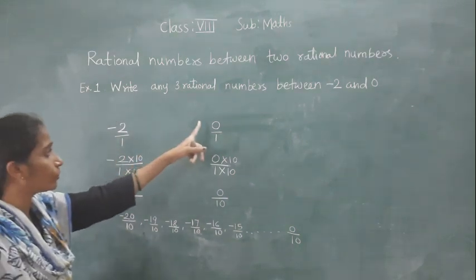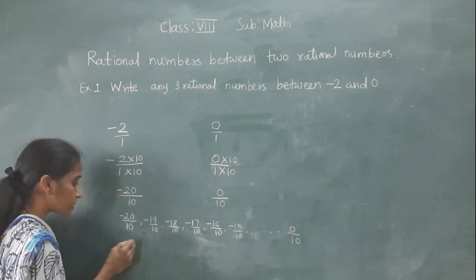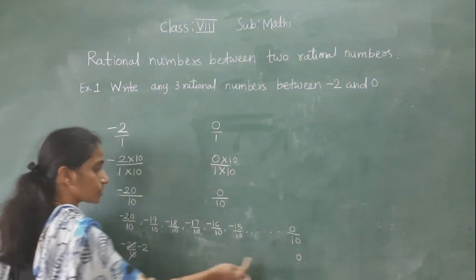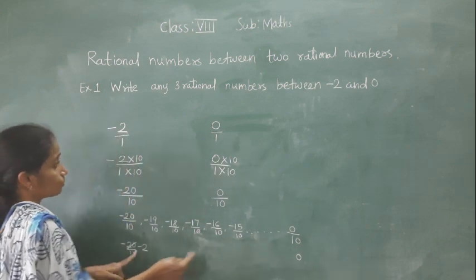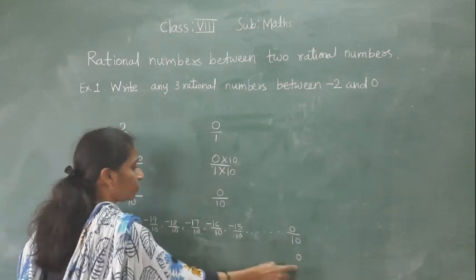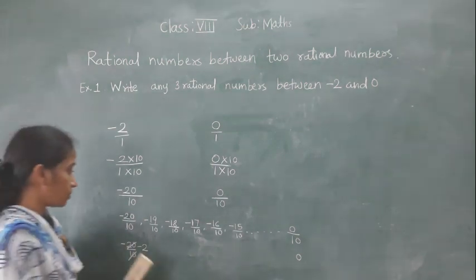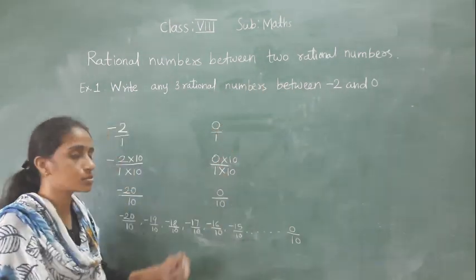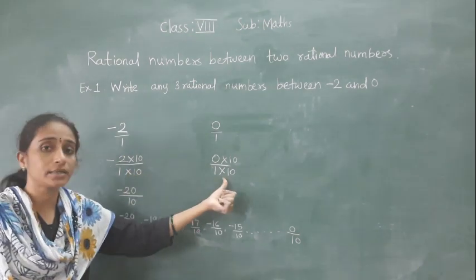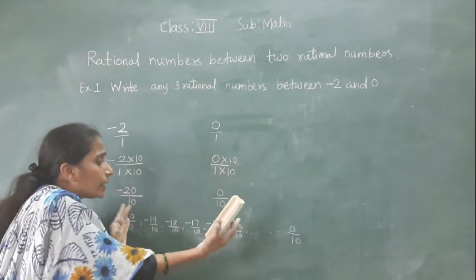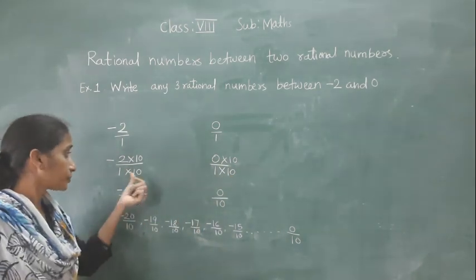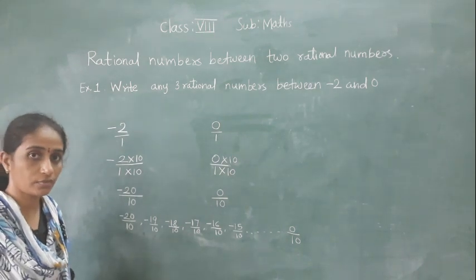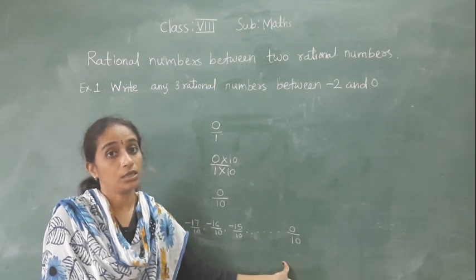If you reduce minus 20 upon 10, you get minus 2, and 0 upon 10 reduces to 0 — confirming these are between minus 2 and 0. So these are all the rational numbers between minus 2 and 0. The question asks for any 3, so you can write any 3 from this list. You can also multiply by 5 instead of 10 and still find rational numbers between two rational numbers. Understood, everyone?